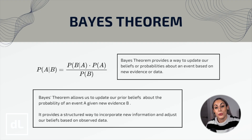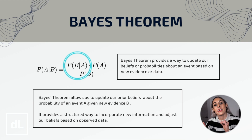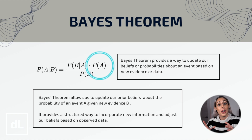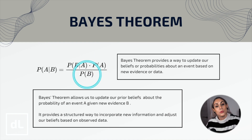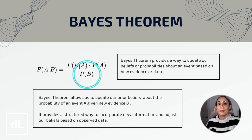Let's talk now about Bayes' theorem and how it is a fundamental concept when it comes to understanding Gaussian processes. Bayes' theorem provides a way to update our beliefs or probabilities about an event based on new evidence or data. The formula for Bayes' theorem is expressed as follows: the posterior probability is the probability of event A occurring given that event B has occurred. The likelihood is the probability of event B occurring given that event A has occurred. The prior probability of event A represents our initial belief before considering new evidence. And the last term is the probability of event B occurring. Bayes' theorem allows us to update our prior beliefs about the probability of an event A given new evidence B, providing a structured way to incorporate new information and adjust our beliefs based on observed data.